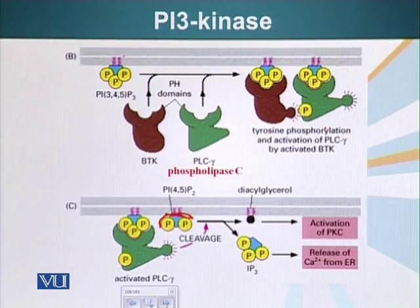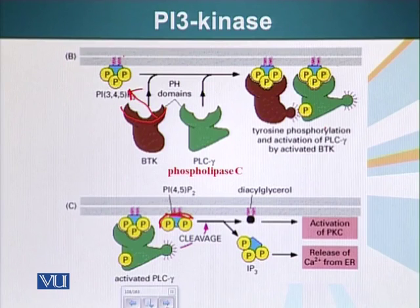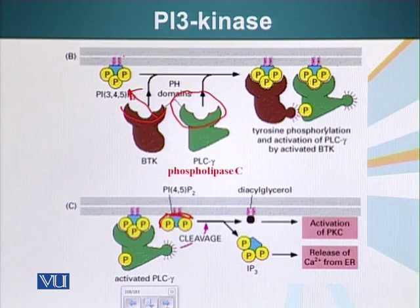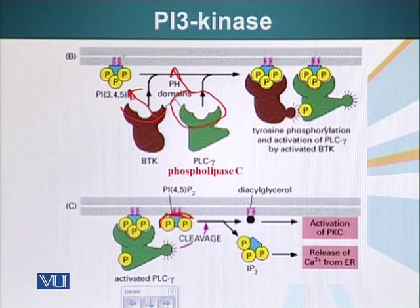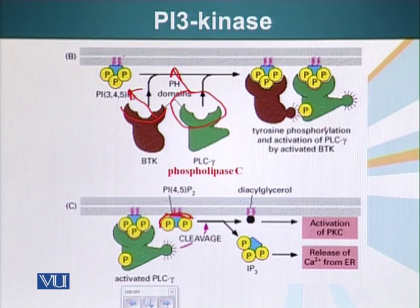BTK stands for Bruton's tyrosine kinase, which has a plexin homology or PH domain that can bind phosphatidylinositol triphosphate. Similarly, PLC gamma also has this PH domain and can bind PIP3. When BTK binds PIP3, it becomes activated. As a kinase, it then phosphorylates PLC gamma, which is also attached at the cytoplasmic face of the plasma membrane.